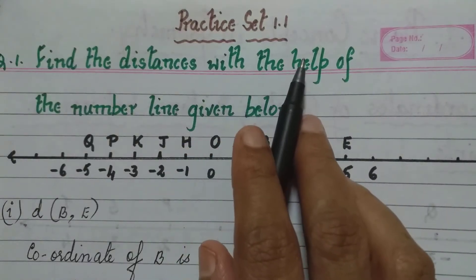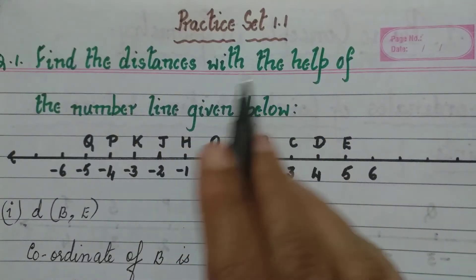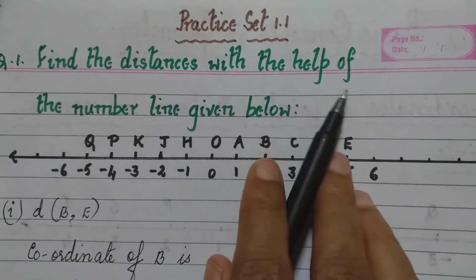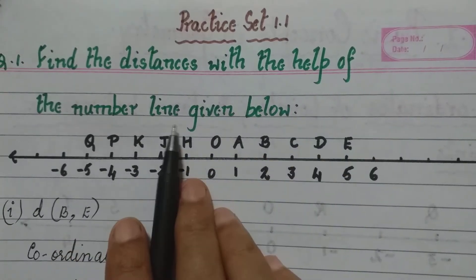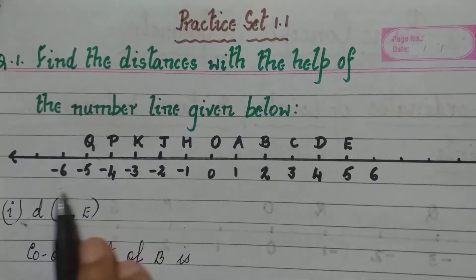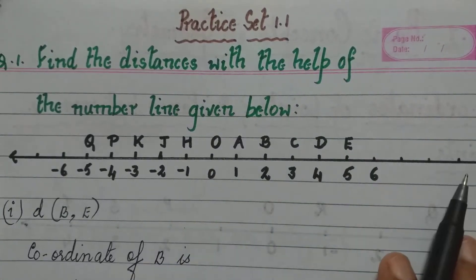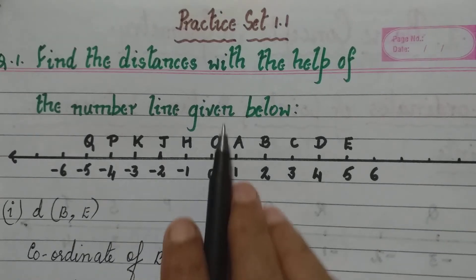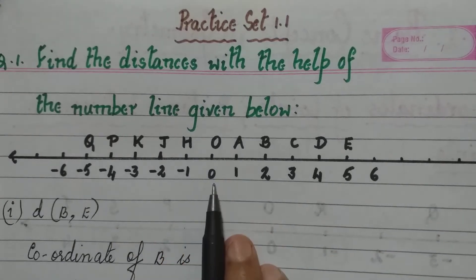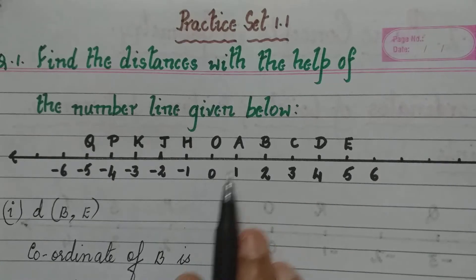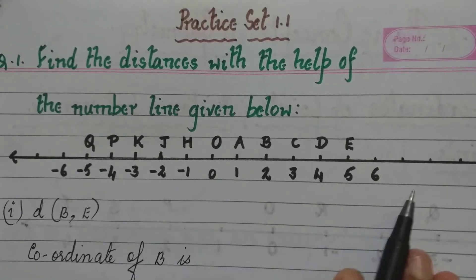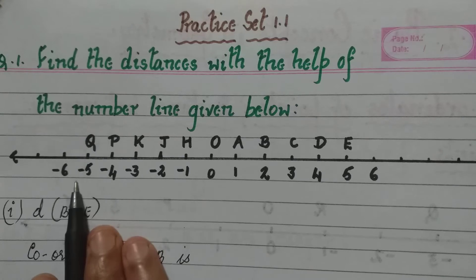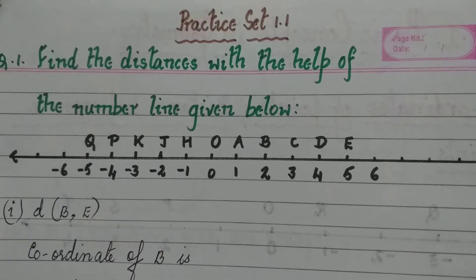Now we go to Practice Set 1.1, Question 1: Find the distances with the help of the number line given below. A number line is given here. In a number line, in the center we usually have 0. On the right hand side of 0 are the positive numbers, and on the left hand side are the negative numbers.